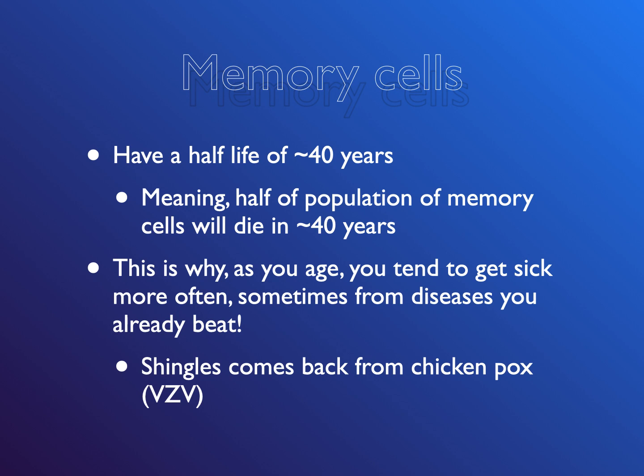The half-life of a memory cell is about 40 years, meaning half of the memory cell population will die of old age in about 40 years. For example, I had chicken pox when I was eight with a thousand memory cells. At age 48, I'll have 500; at 88, I'll have 250. This is why, as you age, you tend to get sick more often from diseases you already beat, like shingles — shingles comes back from chicken pox.